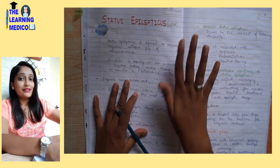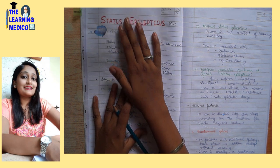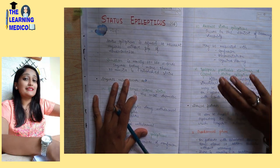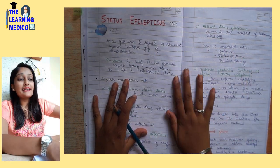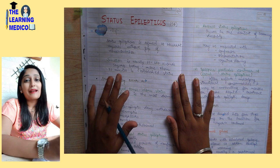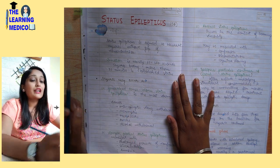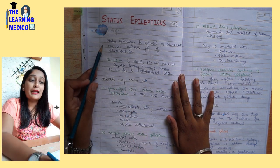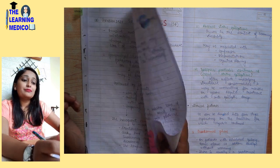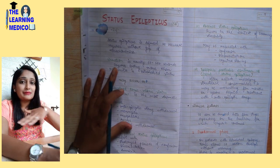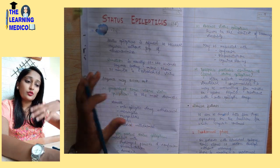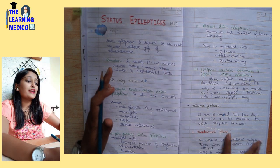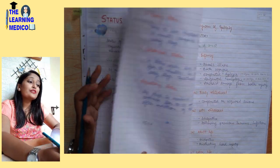So, let's start with today's topic, Status Epilepticus. We will complete this whole series of neurology, Practice of Medicine Paper 2. If you haven't watched the Epilepsy videos, I have covered many terms there so that you will get to understand this topic.